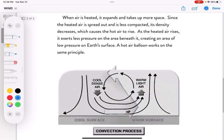When air is heated, it expands and takes up more space. Since the heated air is spread out and is less compacted, its density is going to decrease, which causes the hot air to rise. As the heated air rises, it exerts less pressure on the area beneath it, creating an area of low pressure on the Earth's surface.